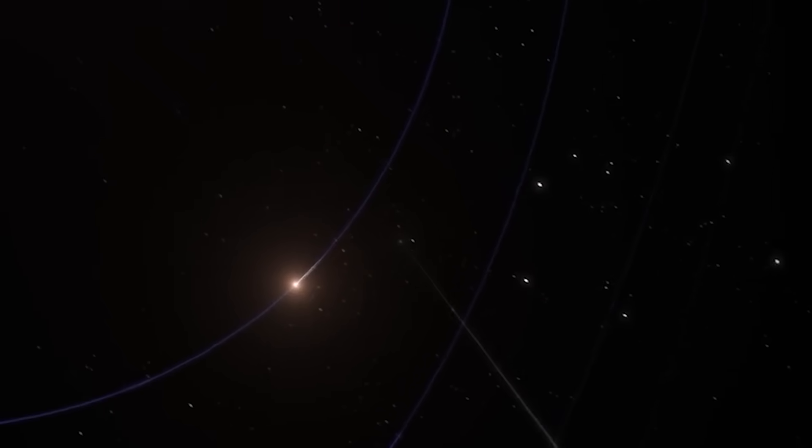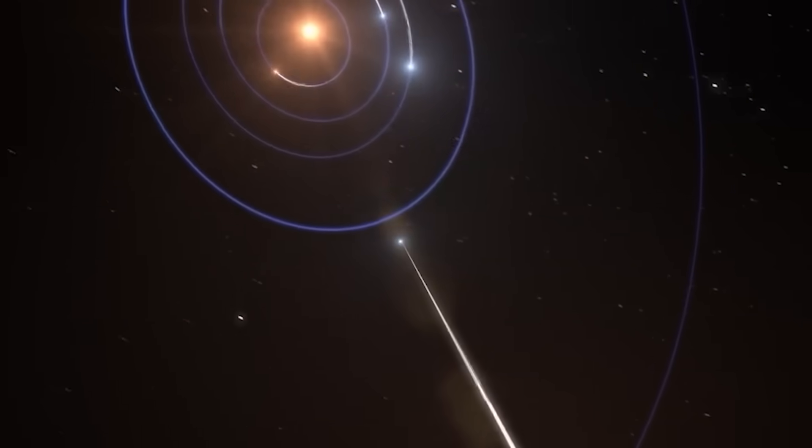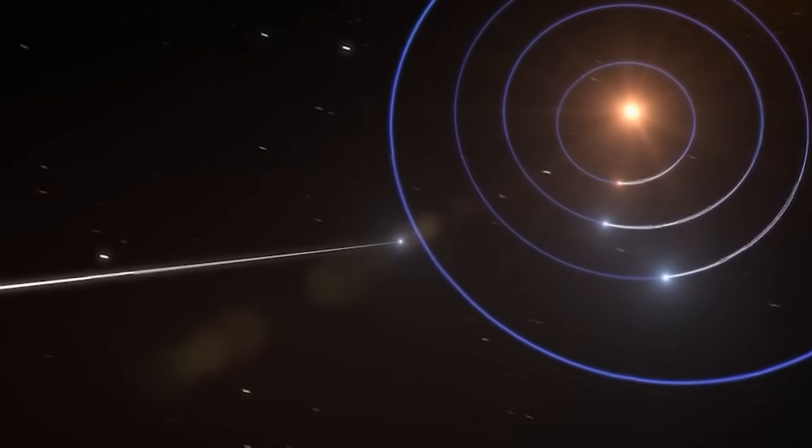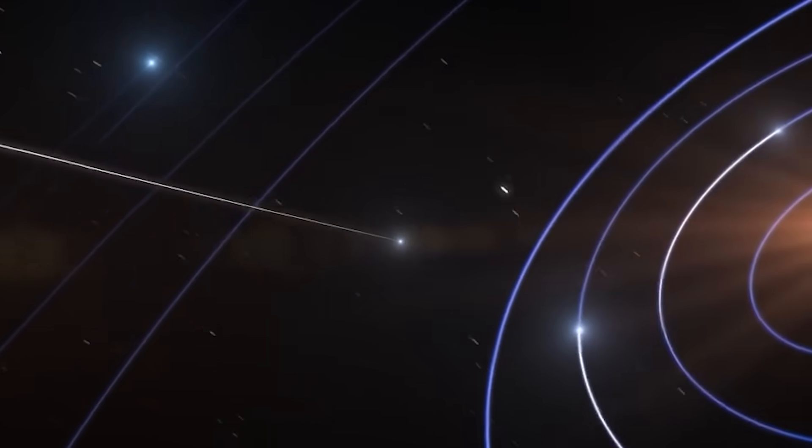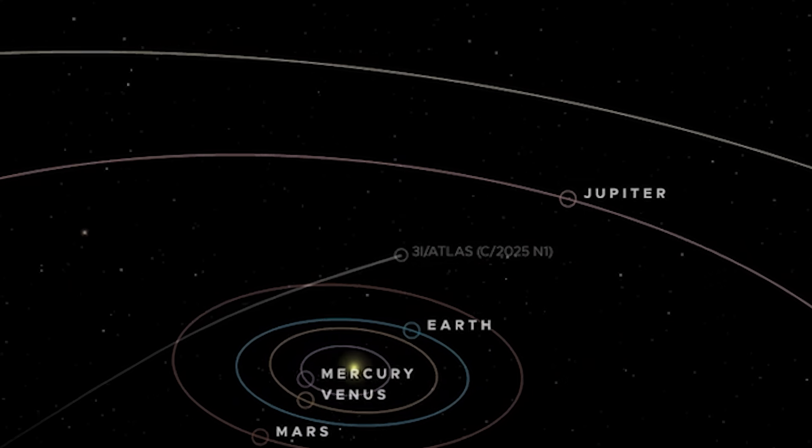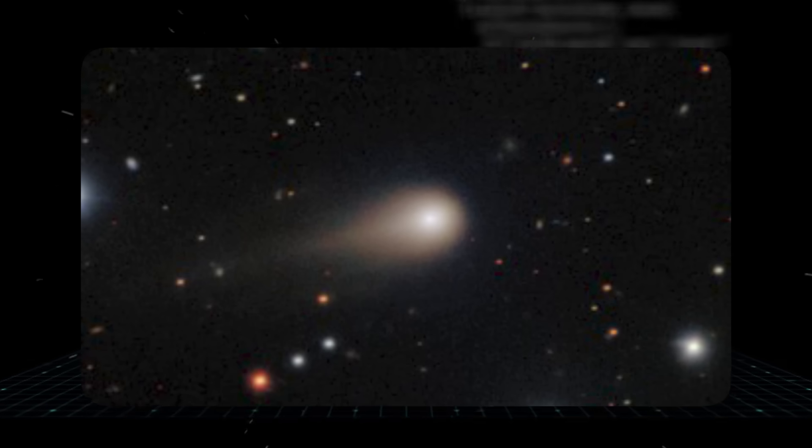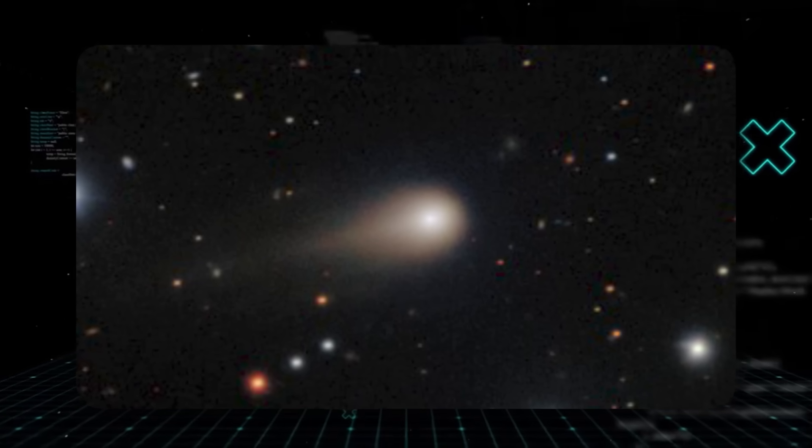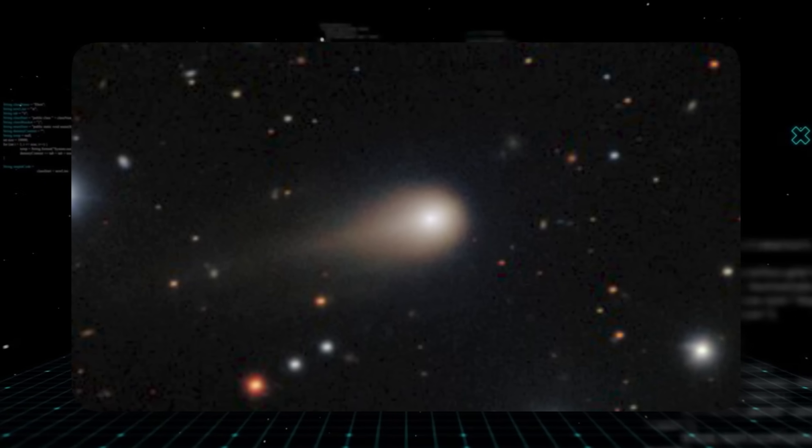Instead, its course flattens neatly into the solar system's ecliptic plane, that very thin sheet where all the major planets orbit. From there, it threads uncomfortably close to Mars, Earth, Venus, and even Jupiter. The ecliptic plane, to put it mildly, is a crowded billiard table of worlds and smaller objects. The odds of something plunging in from a random direction and then precisely sliding along that very sheet seem incredibly low.